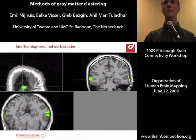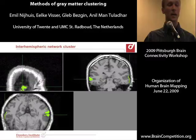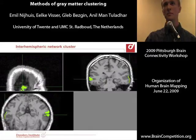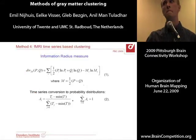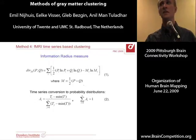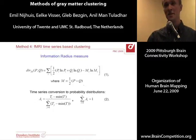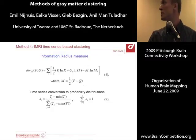The first idea that came to our mind was k-means clustering, but then the question was what measure should be used. After some debate, we decided that the information radius measure, which is a measure for defining the distance between two different probability distributions, is a valid measure for this purpose.